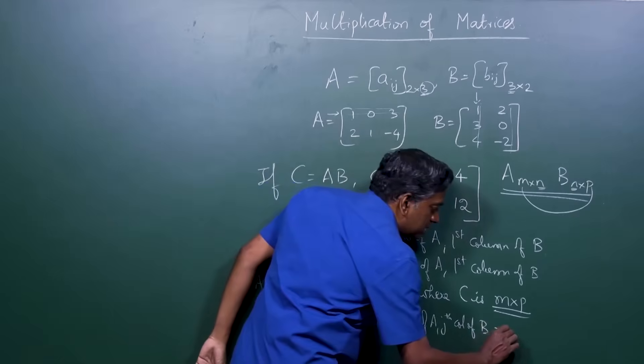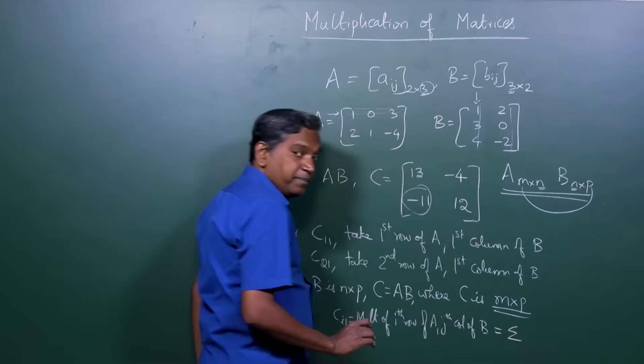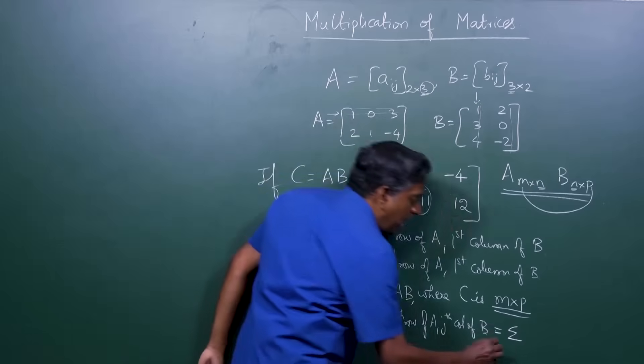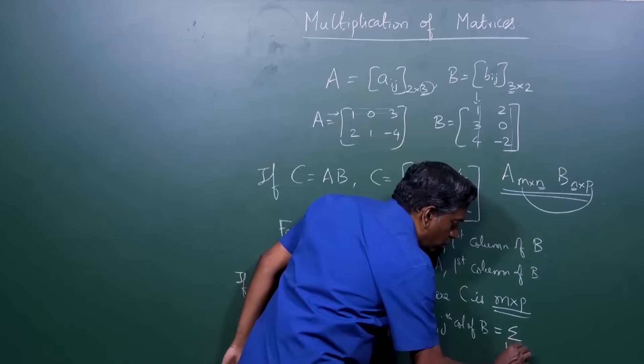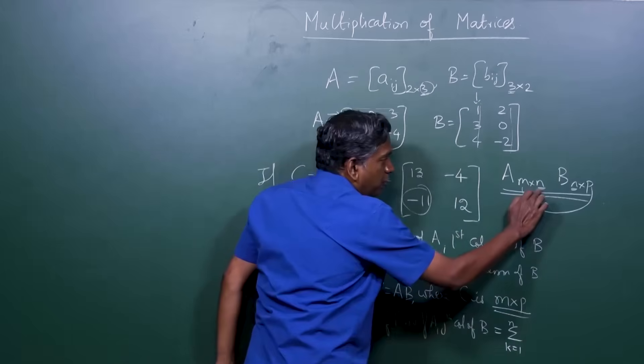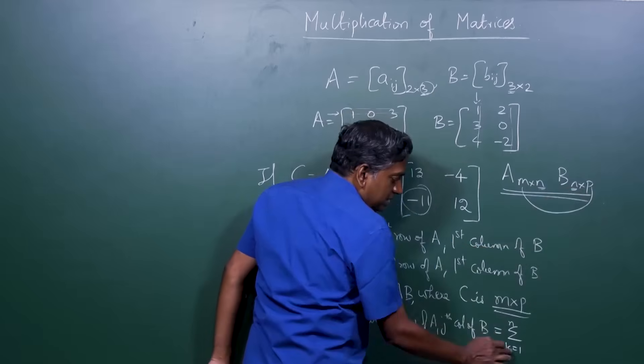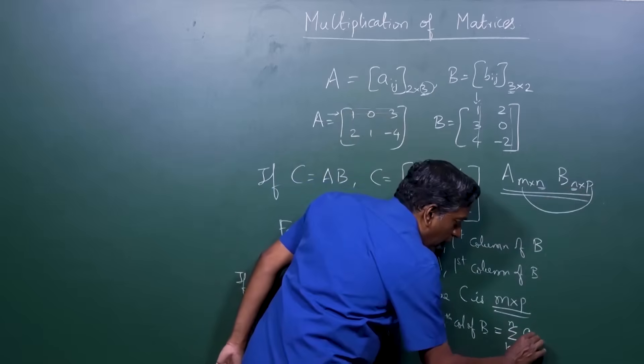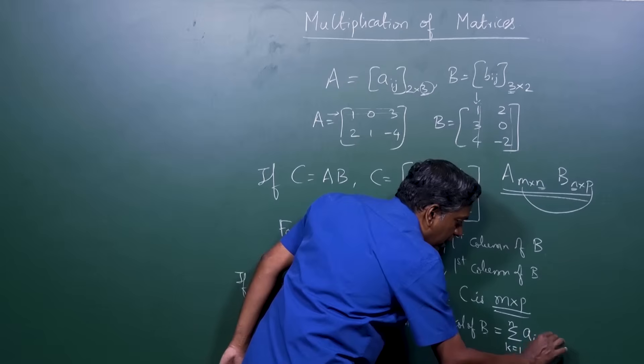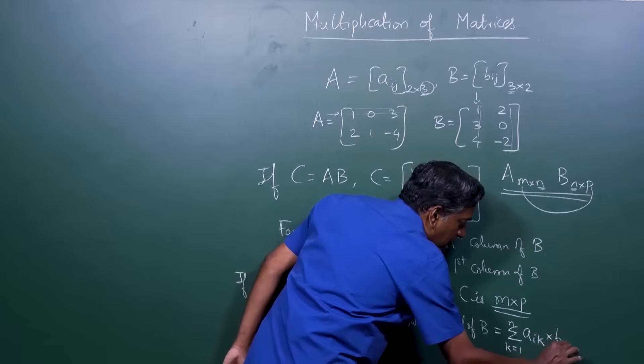You take the i-th row and multiply by the j-th column. And this can be written as sigma, K is equal to 1 to N, the number of columns and the number of rows. That is the K. So you do Aik times Bkj.